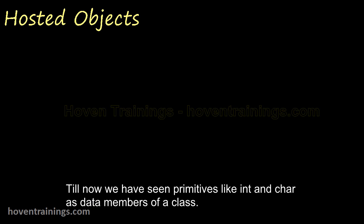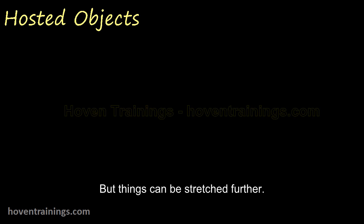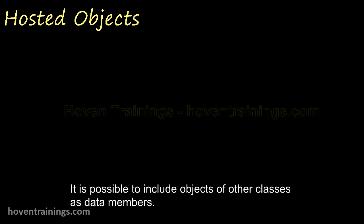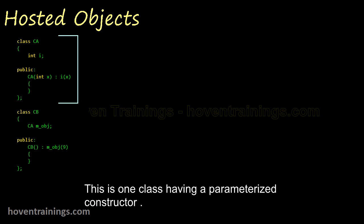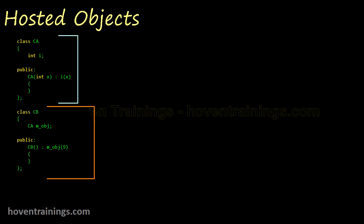Till now we have seen primitives like int and char as data members of a class. But things can be stretched further. It is possible to include objects of other classes as data members. This is one class having a parameterized constructor. This is a second class that hosts an object of the above class. This is the hosted object.